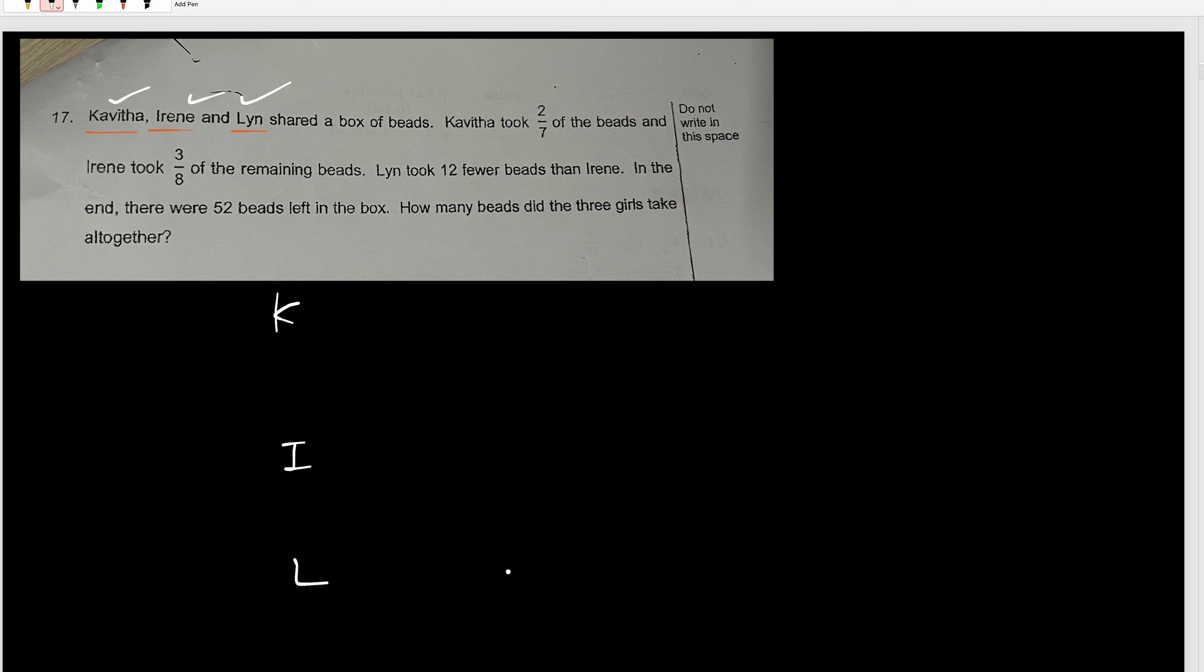You have Irene, you have L. Okay, so this is clearly branch method - took, remaining, rest, left, right? And then you see another left. And somehow you have a lot of fractions. So this is clearly our branch, we should use our branch method.